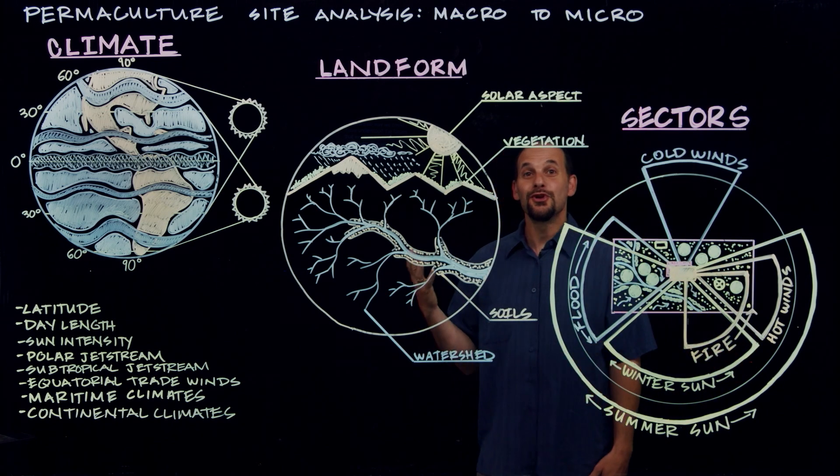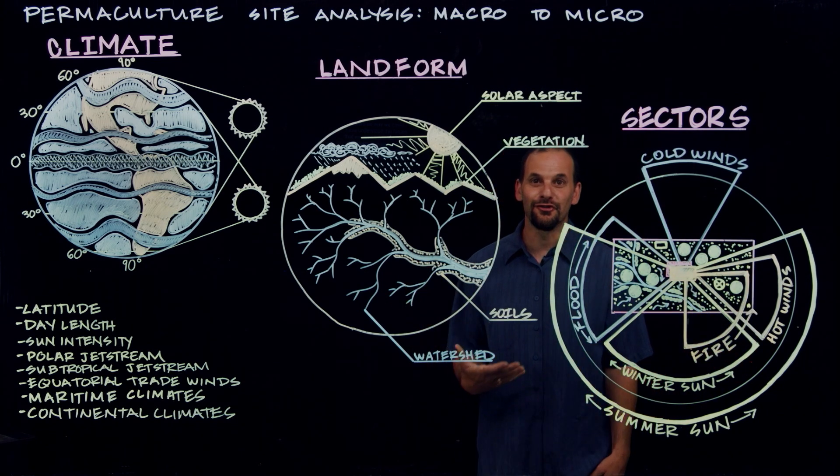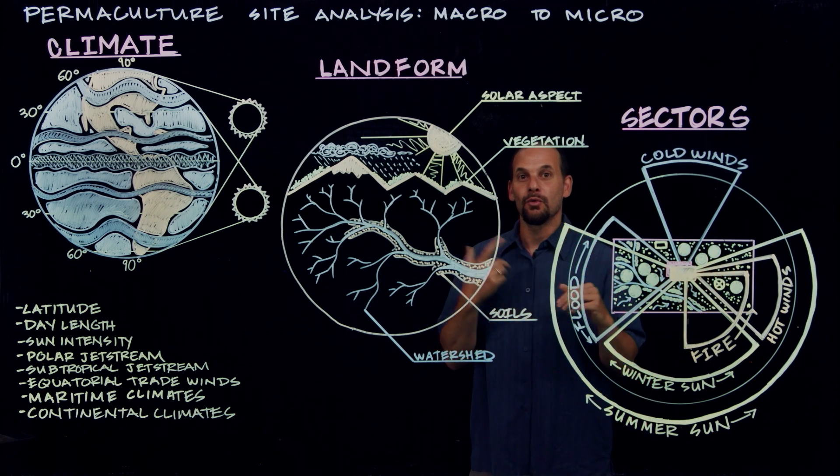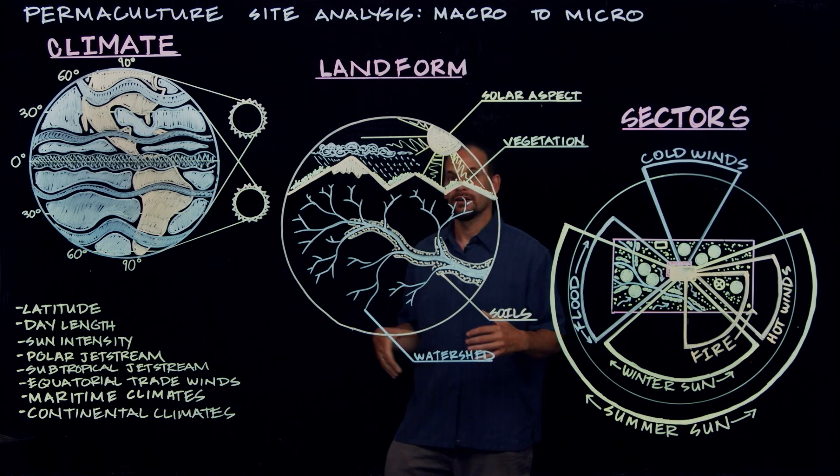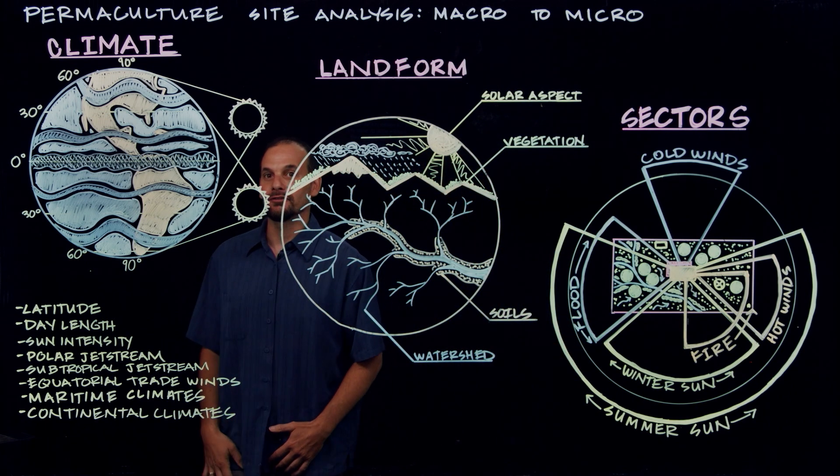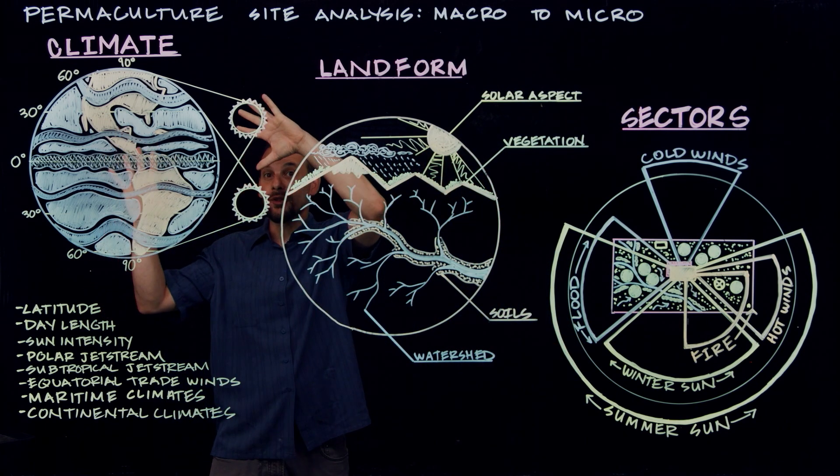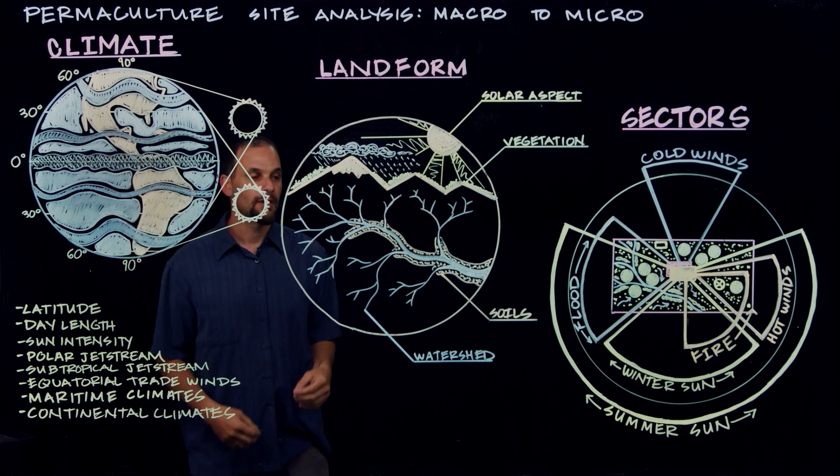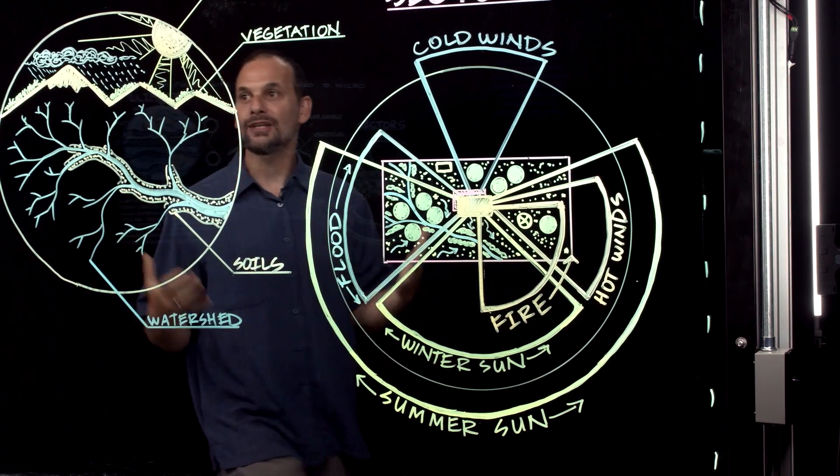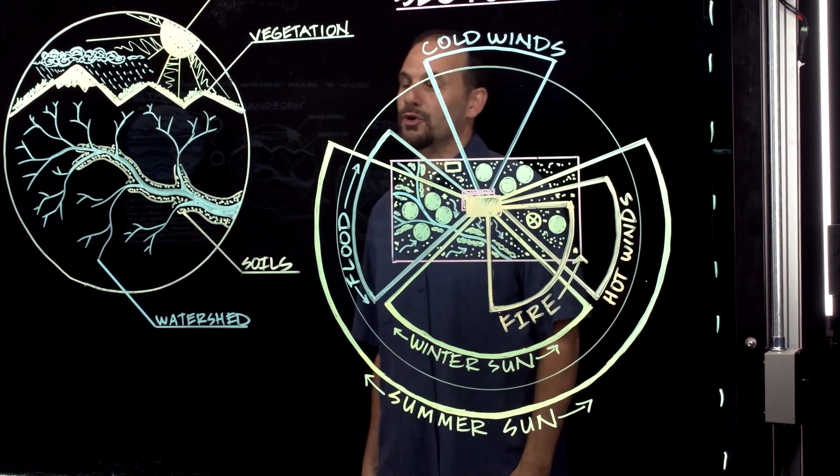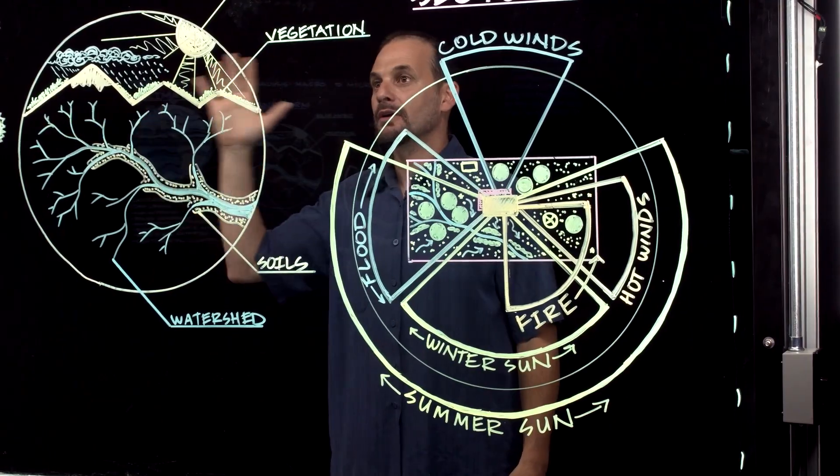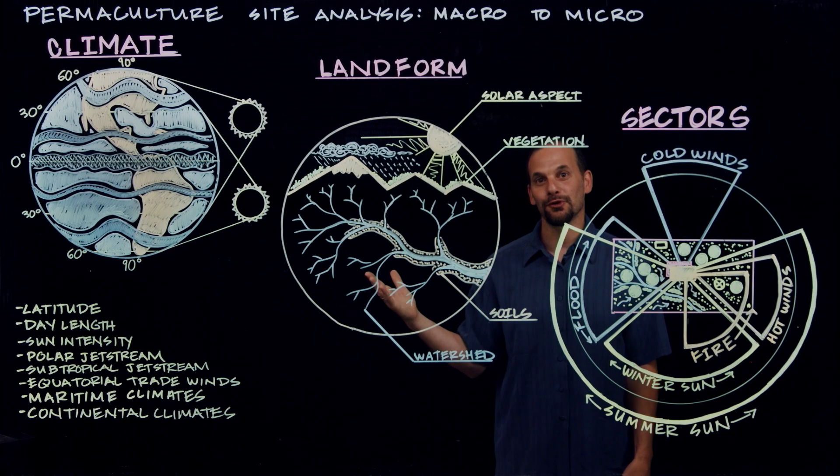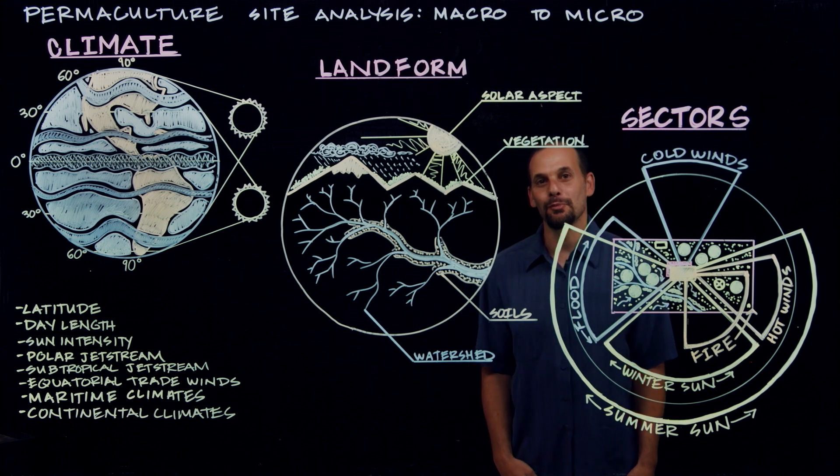There's no way we could have understood the forces that we need to design for at this close-up scale here without having started from the macro perspective. Looking at where we sit on the planet and where we rest within the watershed. This is the essential process of permaculture site analysis. Going from macro to micro. And this process is the basis for permaculture design. So don't be a dummy.